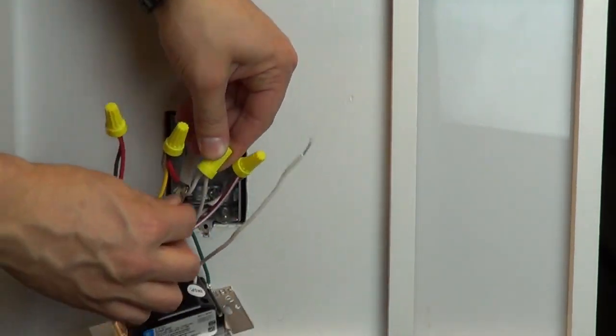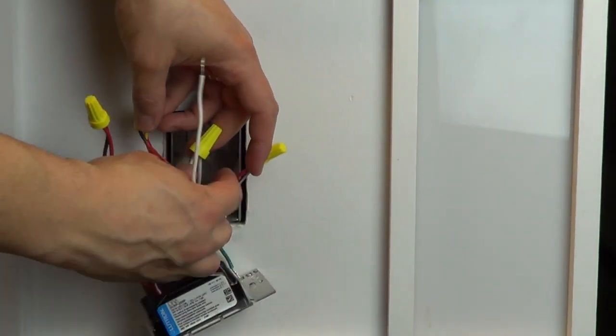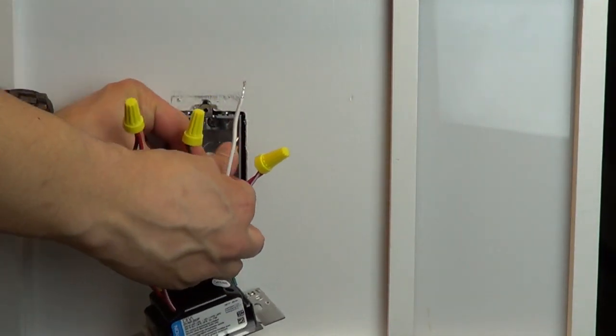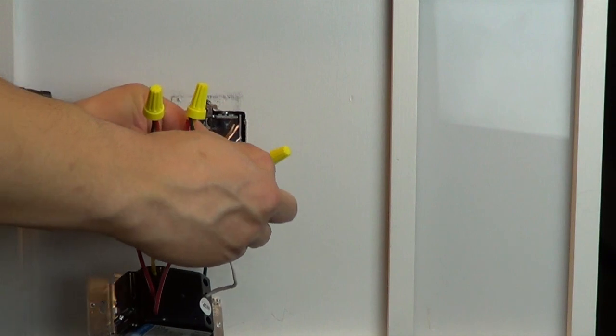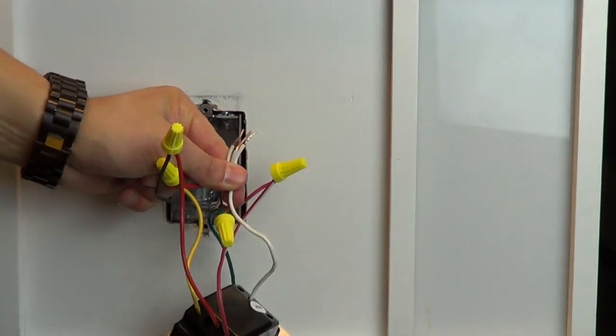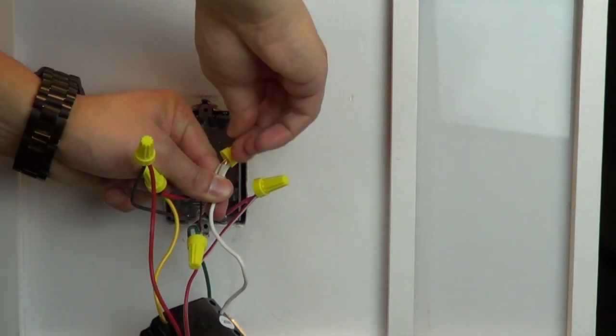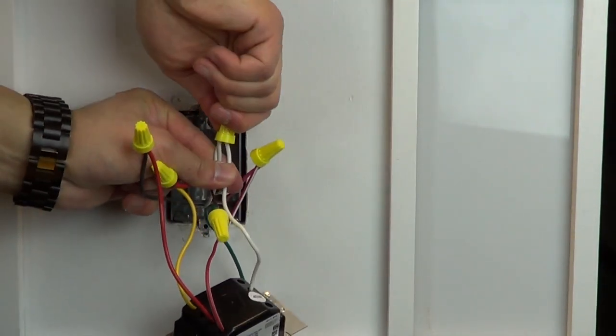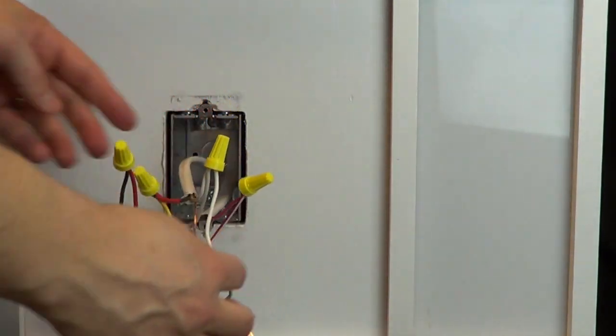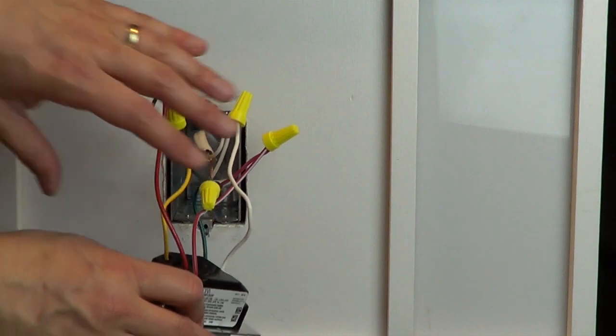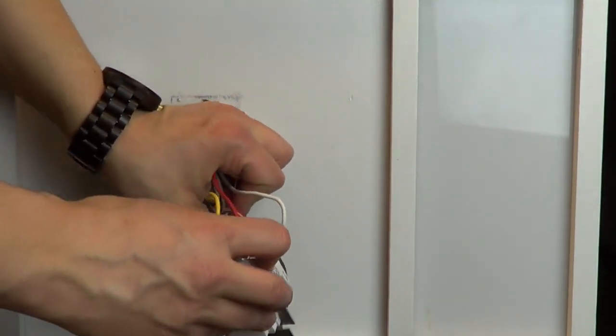Finally, connect the white wire to the neutral wires in your wall box. Screw the control back into the wall and add the wall plate.